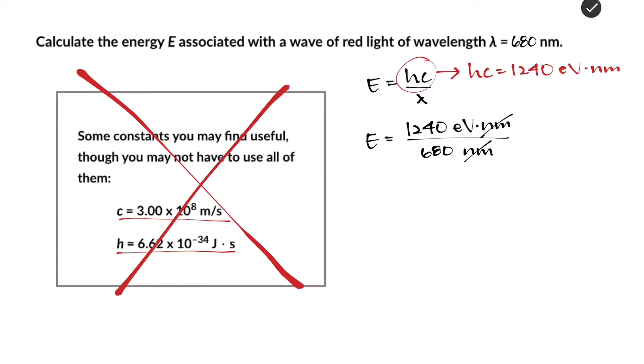The nanometers up top cancel with the nanometers down at the bottom, and now we have 1240 divided by 680 and the units that we're going to be getting are electron volts, which is exactly what you want since that's a unit that's associated with energy.